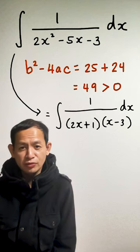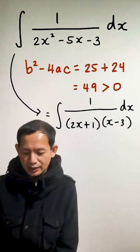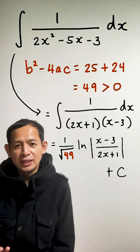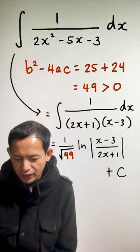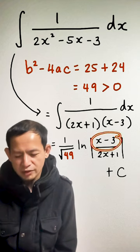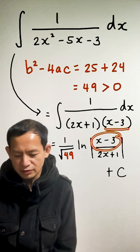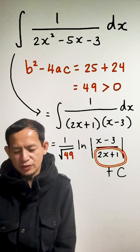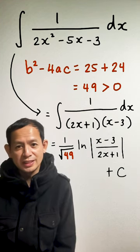If we can factor out the denominator we can easily evaluate the integral and its value is equal to 1 over the square root of that discriminant and then ln of absolute value of x minus 3, which is actually the factor that will give you the larger zero of the denominator, and then over 2x plus 1 that gives you the smaller zero of the denominator, and then plus c.